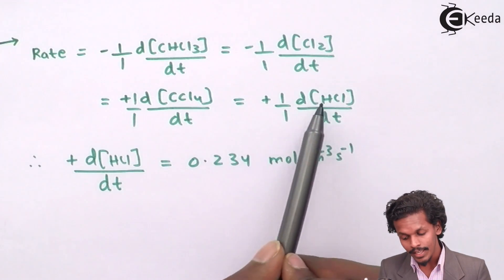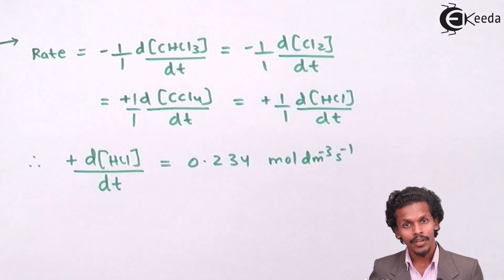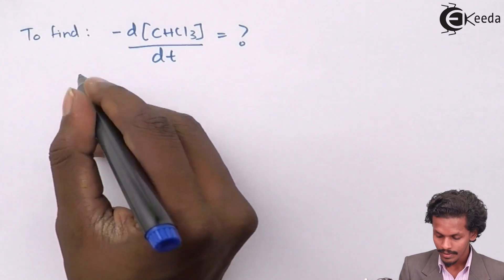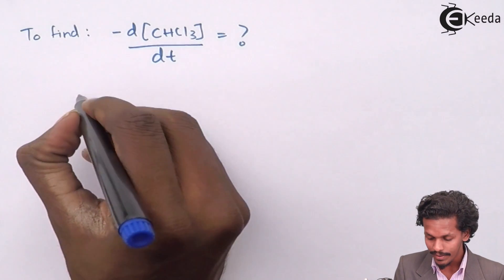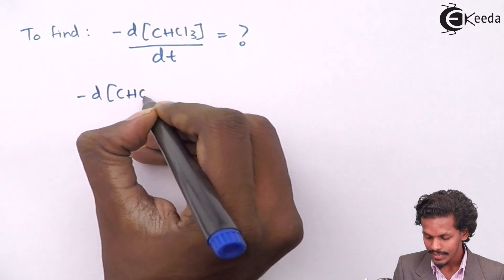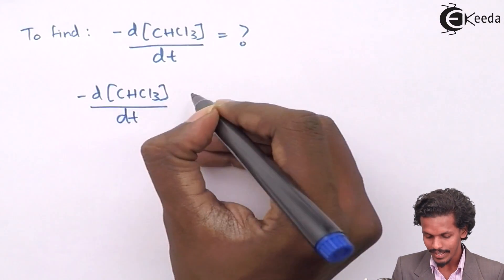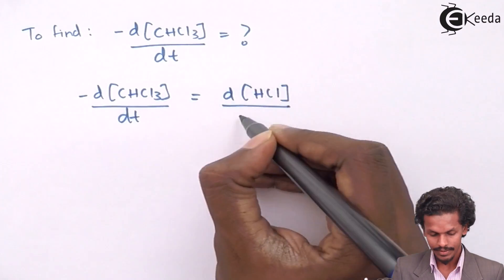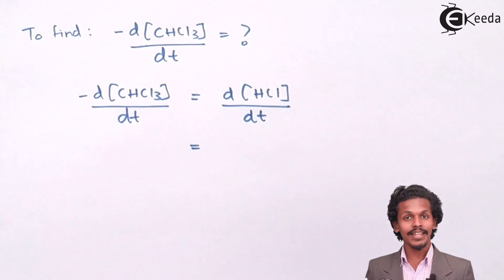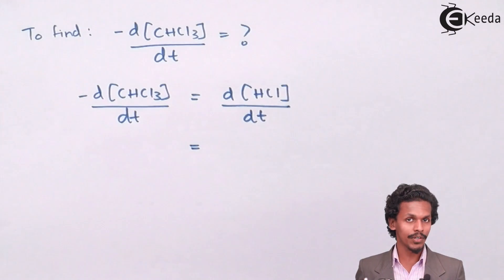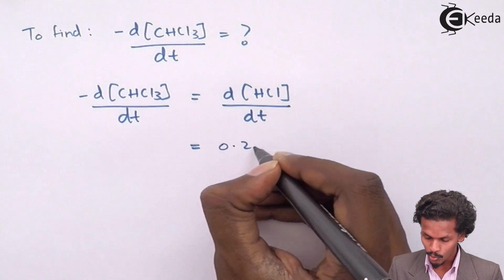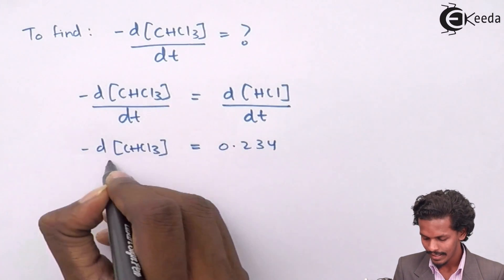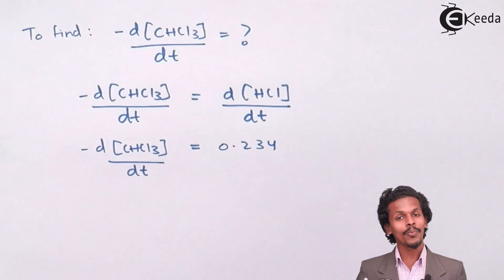So HCl is here and we have to determine the rate of consumption of CHCl3. So every time we will equate this thing with this. Okay. So by doing this values or this rate of reaction, I could equate minus d CHCl3 upon dt, which is equals to d of HCl upon dt. And the value of HCl is also given to us or the concentration with respect to time is also given to us and that is 0.234. And hence,